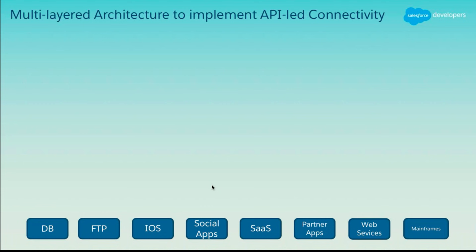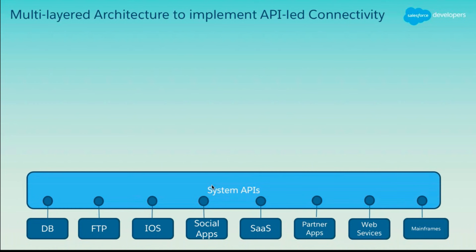Every end system providing a service — database, FTP, iOS, social apps — can create an API and expose it as a connector. These connectors take care of how data is moved between systems. Together, these connectors are called system APIs. A core integration engineer who is technically skilled typically works on the system APIs.